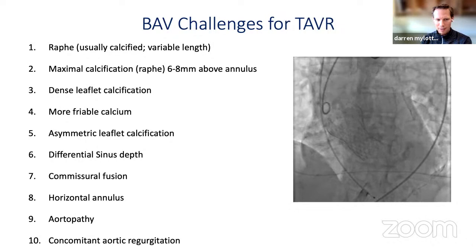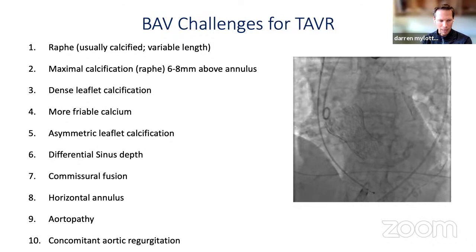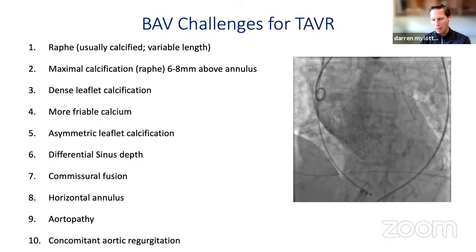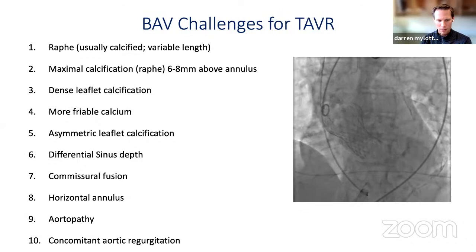We have dense leaflet calcification more significant than with tricuspid valves. It's possibly more friable and certainly asymmetric. We have differential sinus depth that can impact pacemaker rates and implant depth. Commissural fusion can be an issue, particularly in self-expanding valves. The horizontal annulus is not a big deal for short valves, but for longer stiffer valve frames it can be. Aortopathy is an issue, and concomitant aortic regurgitation can make patients unstable or make valve implantation tenuous given movement of the frame.